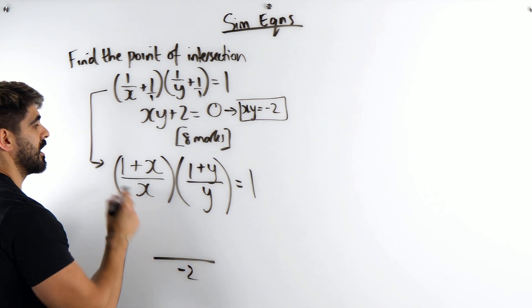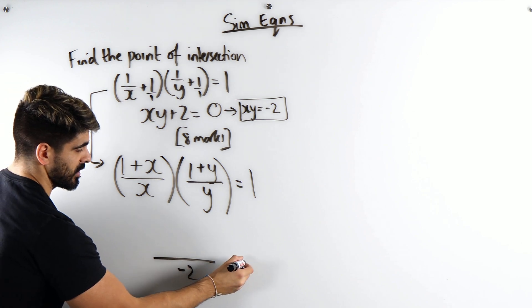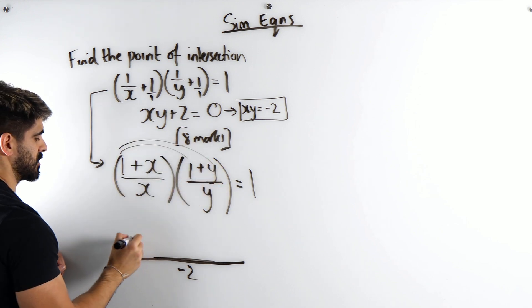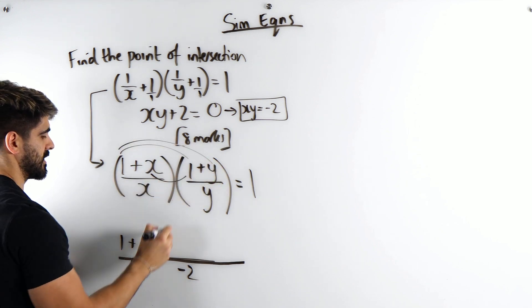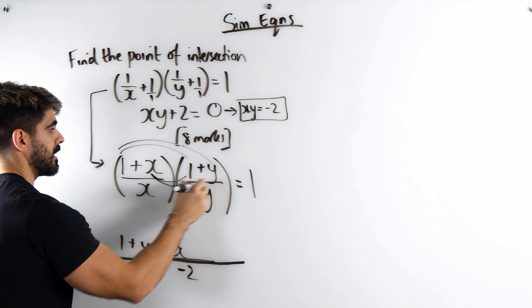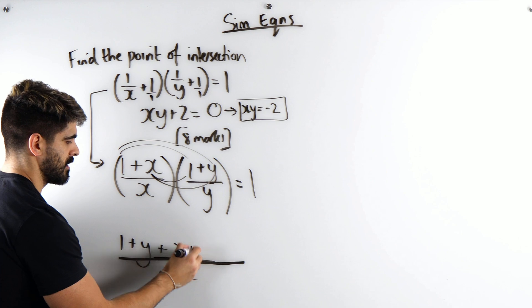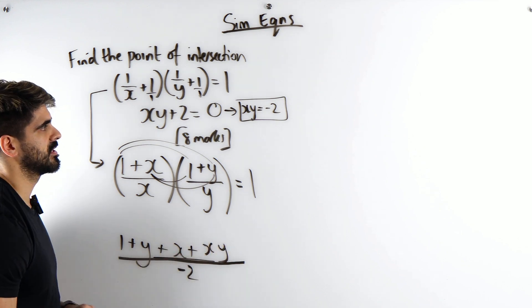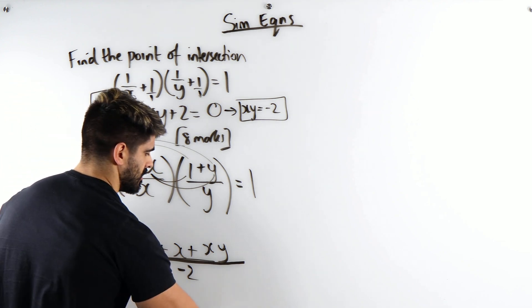So in the denominator when I multiply these together I'm actually going to put minus 2. Okay, now on the numerator for sure we're going to start expanding. So we have 1, plus y, plus x, plus xy. But we know what xy is, xy is minus 2. Just replace it.